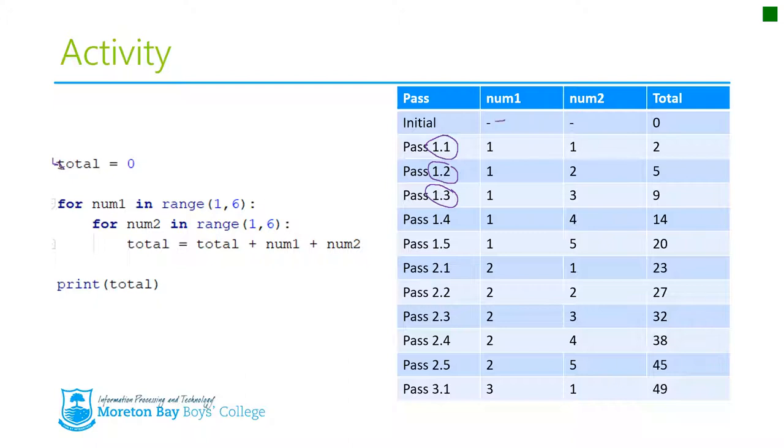So the very first pass we come down here. Initially, num1 and num2 are worth nothing. And total is set, initiated to zero. Then we say, okay, let's go down and have a look. For num1, the first pass, the first pass is here, here, and here. At this point, at this point, the first time through, num1's value is 1 and num2's value is 1. So add those two together to give you 2.